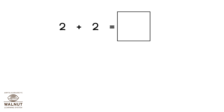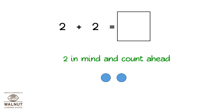Let's now do it without drawing dots. Number: 2 plus 2. Keep 2 in mind and count ahead. So, we keep 2 in mind and count 3, 4. So, the answer is 4.